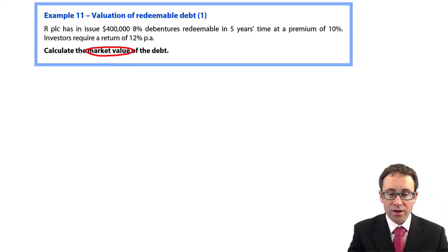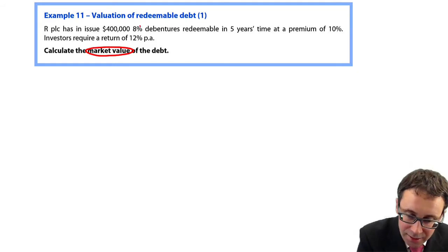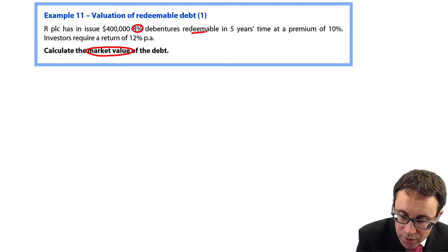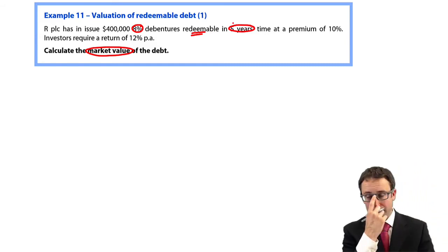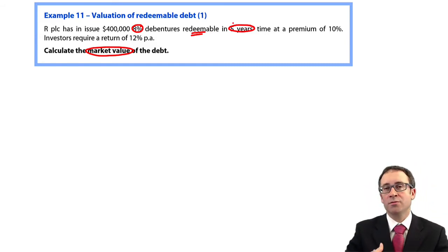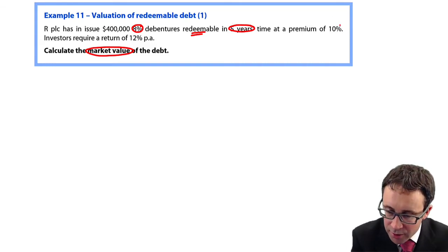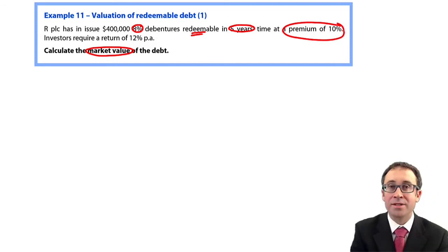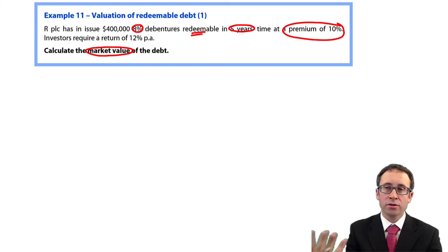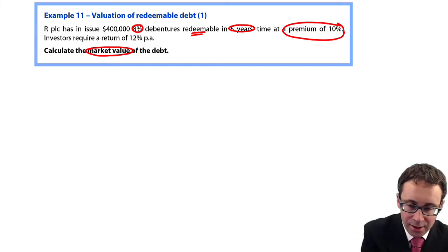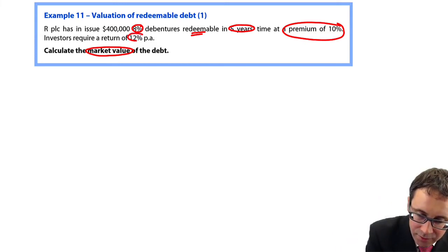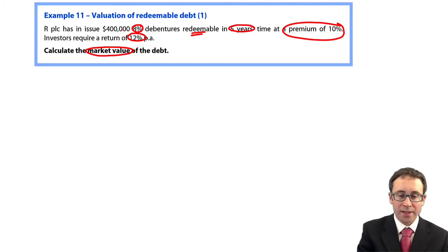Here, work out the market value of debt. We have $400,000, 8% debentures. They are redeemable in five years' time. We have redeemable debentures and we're only going to get the coupon interest at 8% from T1 to 5. It's going to be redeemed at a premium of 10%, so based on your par of 100, 10% above 100 is 110. Any discounting we're going to do is at 12%.